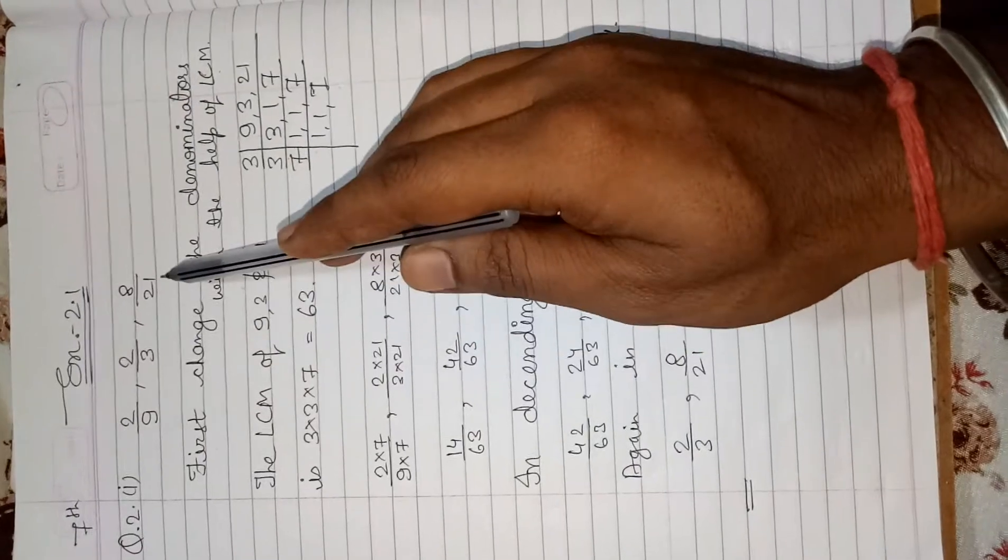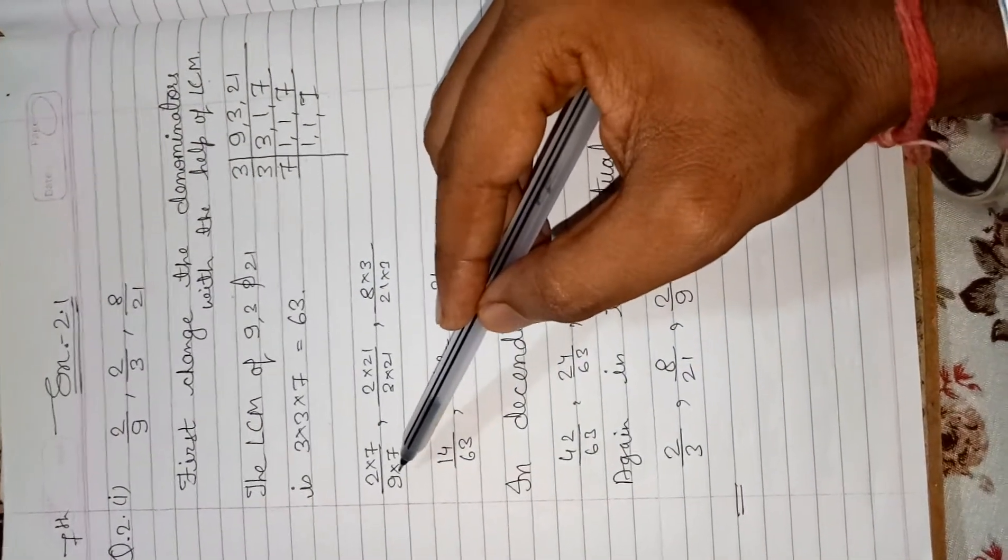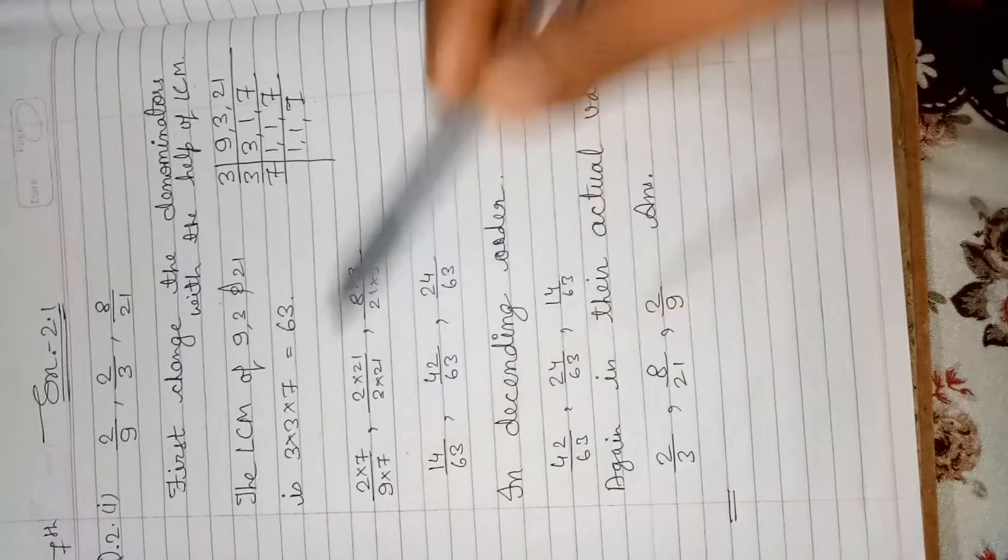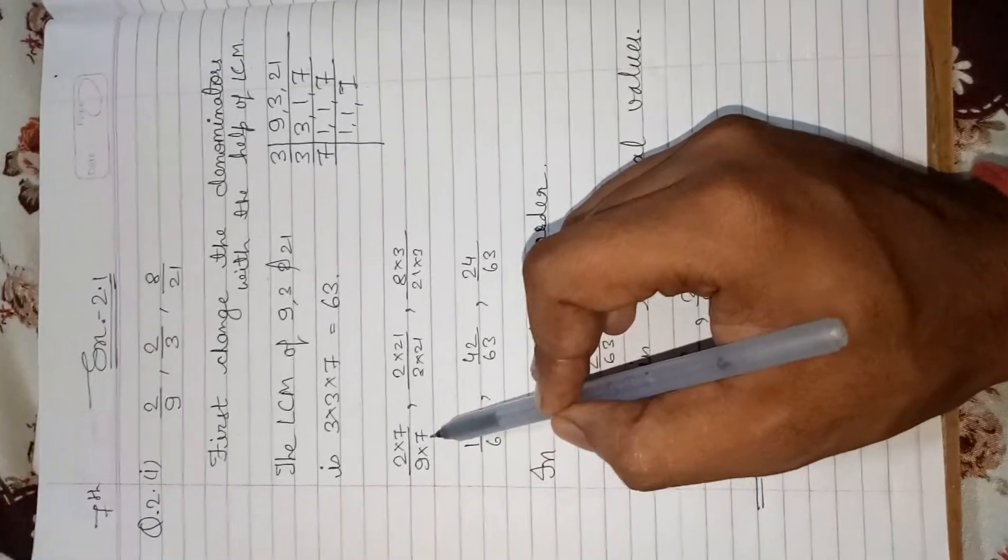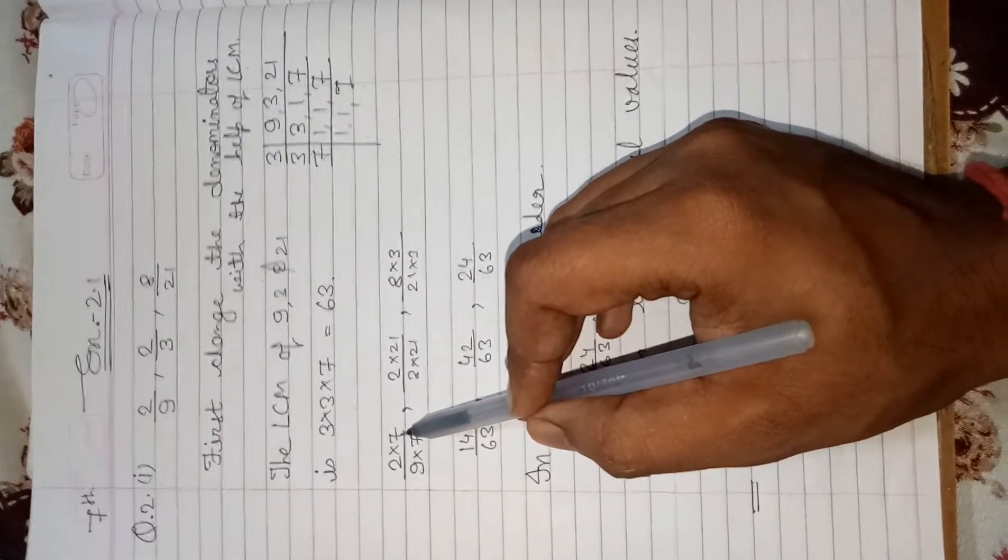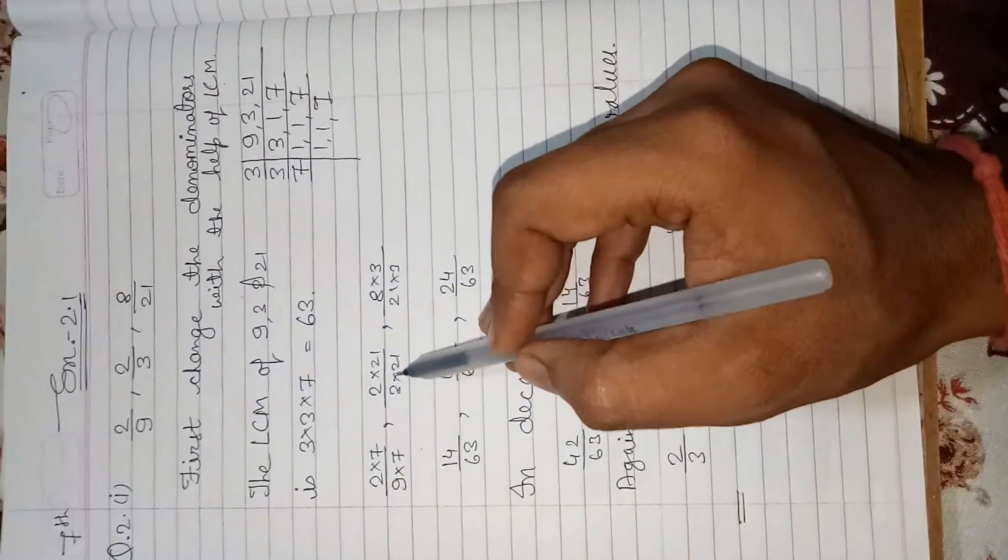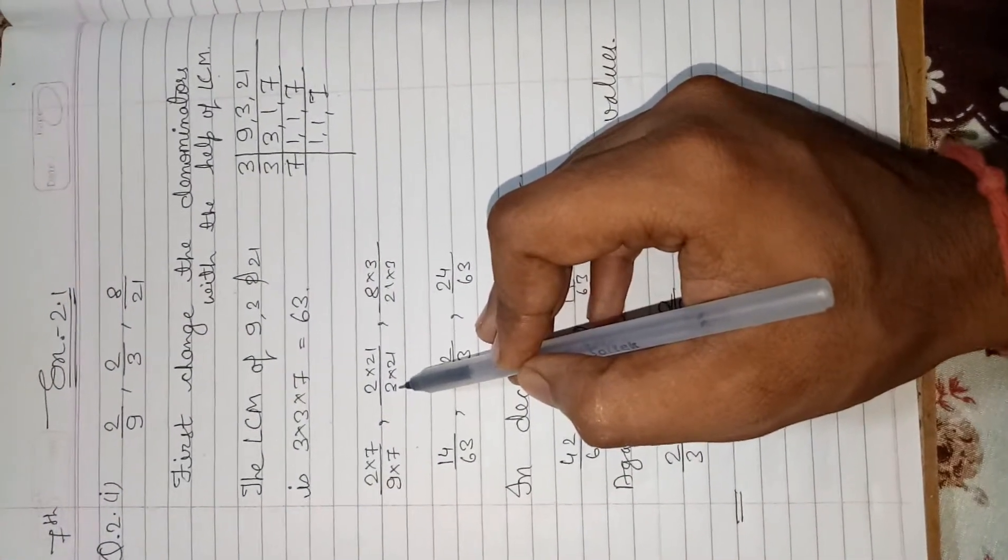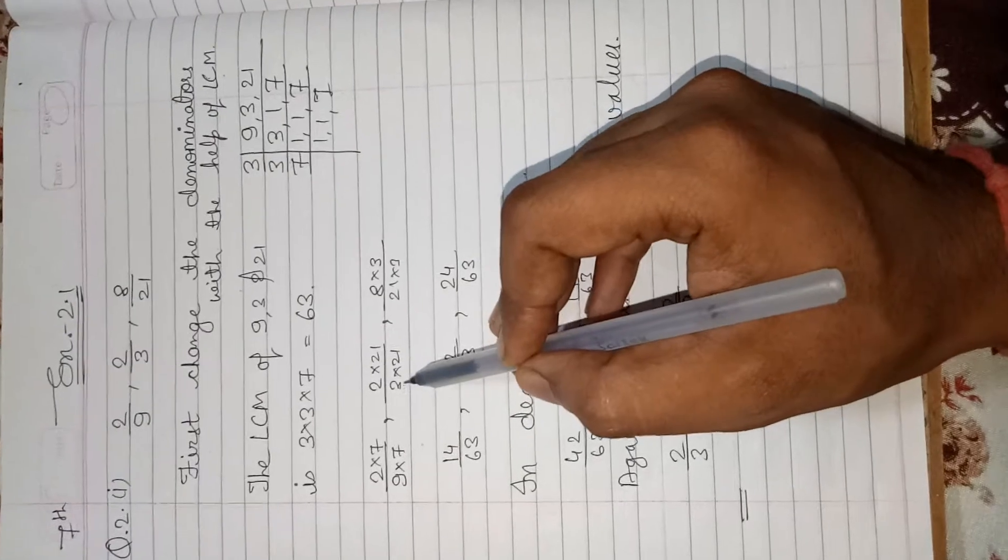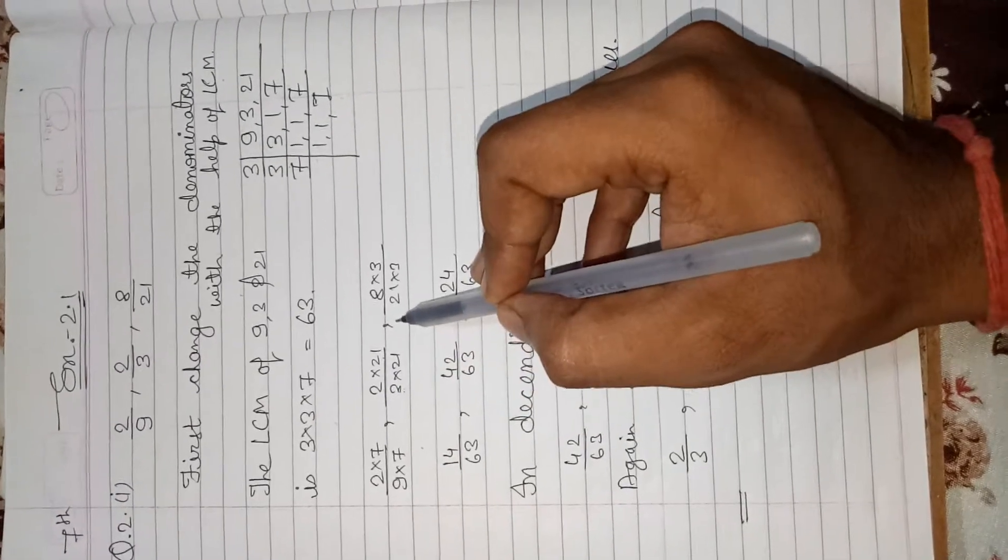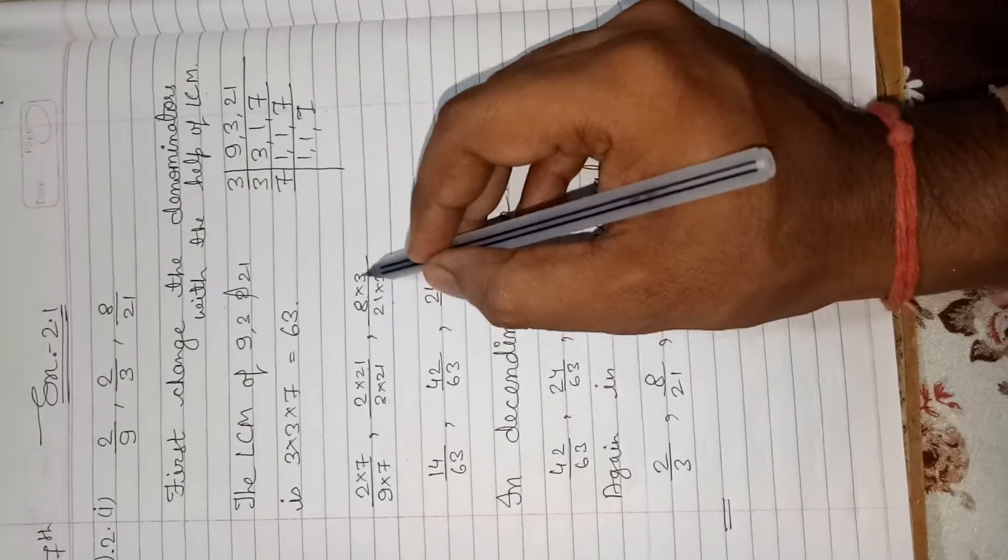Now, change all the three fractions into with their denominator 63. First, 2 by 9. By which number we will multiply in denominator so the number becomes 63? The number is 7 because 9 times 7 is 63. So we have also multiplied 7 in the numerator. 2 into 7 upon 9 by 7. The next fraction is 2 by 3. We will multiply 3 to 21. Then 3 into 21 as numerator also 2 into 21. Next, 8 upon 21, then 21 into 3 and numerator 8 into 3.